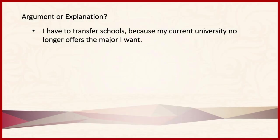Now, in practice, this can often be a lot more difficult to distinguish than it is in theory. Consider, for example, this statement: 'I have to transfer schools because my current university no longer offers the major I want.' What follows the word 'because' could be offered as evidence to establish the truth of the claim that I have to transfer schools. However, it could also be used as an explanation for why I have to transfer schools. Without knowing the speaker's intent, there's really no way to tell whether this is an argument or an explanation.